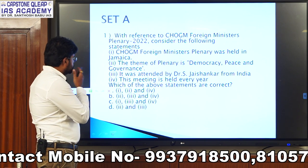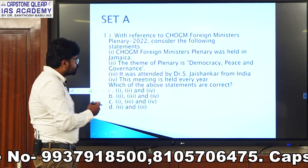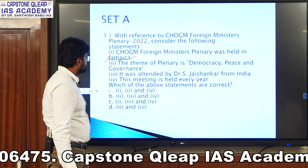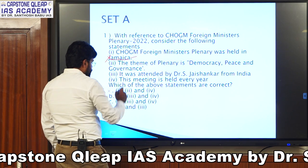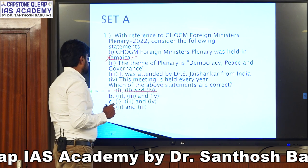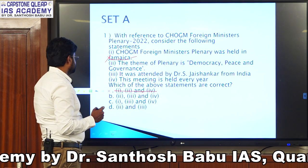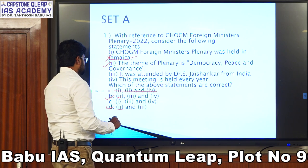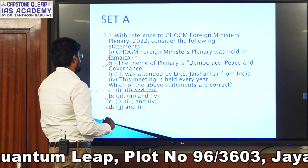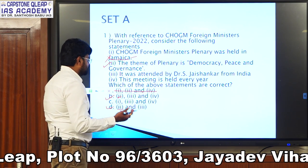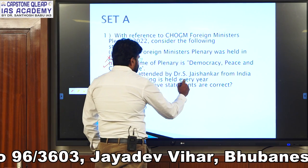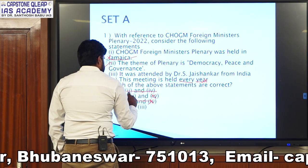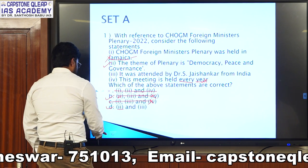Since this is a factual-based question, we need certain knowledge to answer it. From the first point, this option is wrong — it was not held in Jamaica, it was held in Rwanda, Africa. So we can easily eliminate option A. The theme of the plenary was democracy, peace and governance — option two is the right option, so options B and D both contain option two. The meeting is not held every year, so we can eliminate options B and C. Hence, the answer is option D.